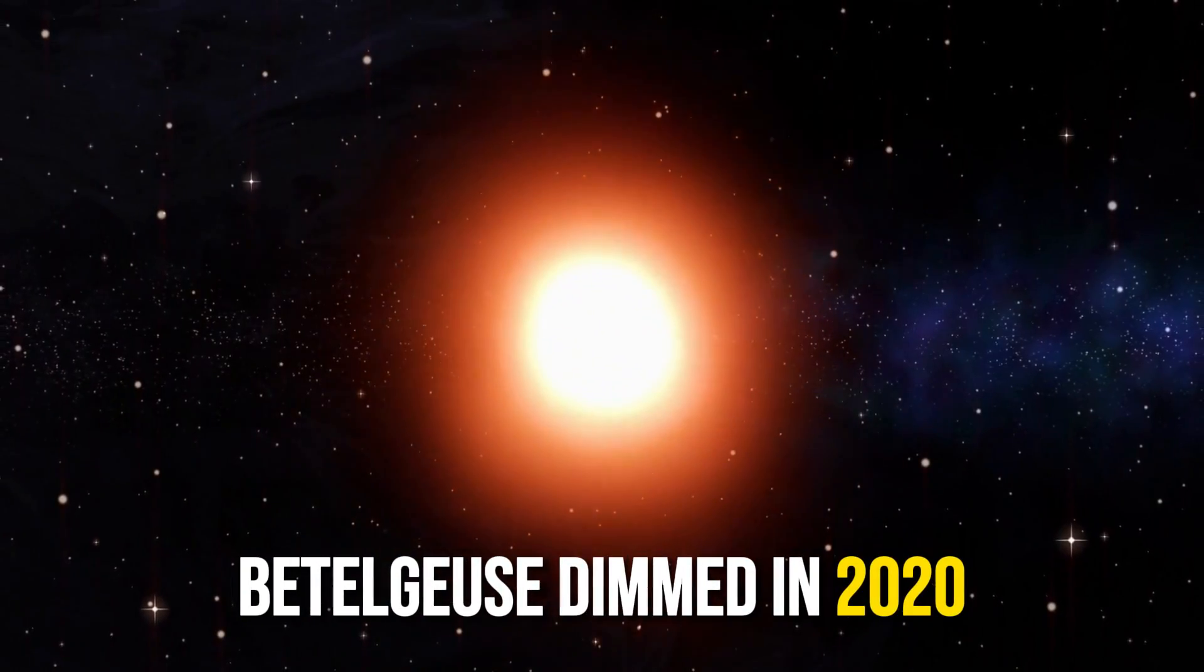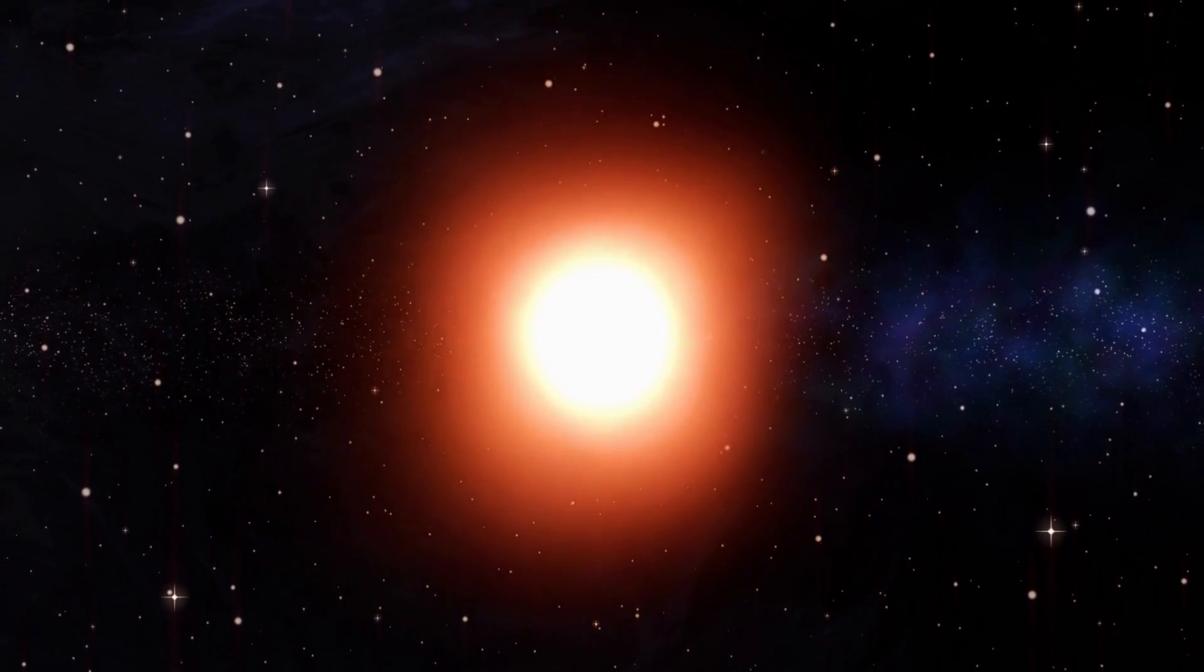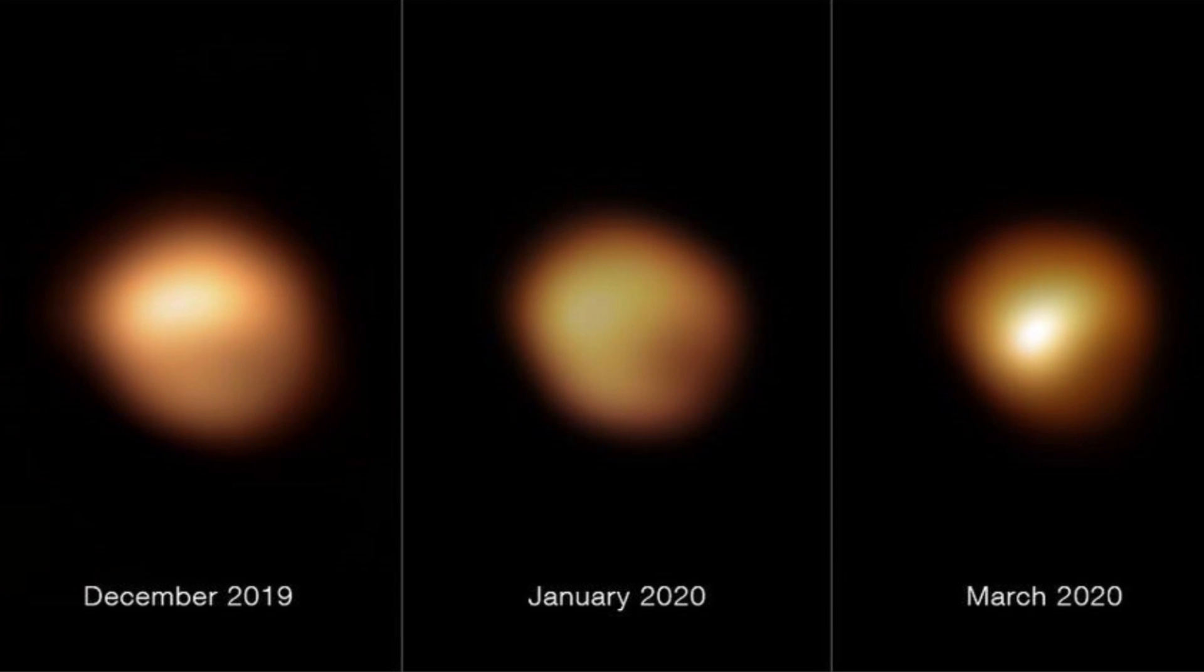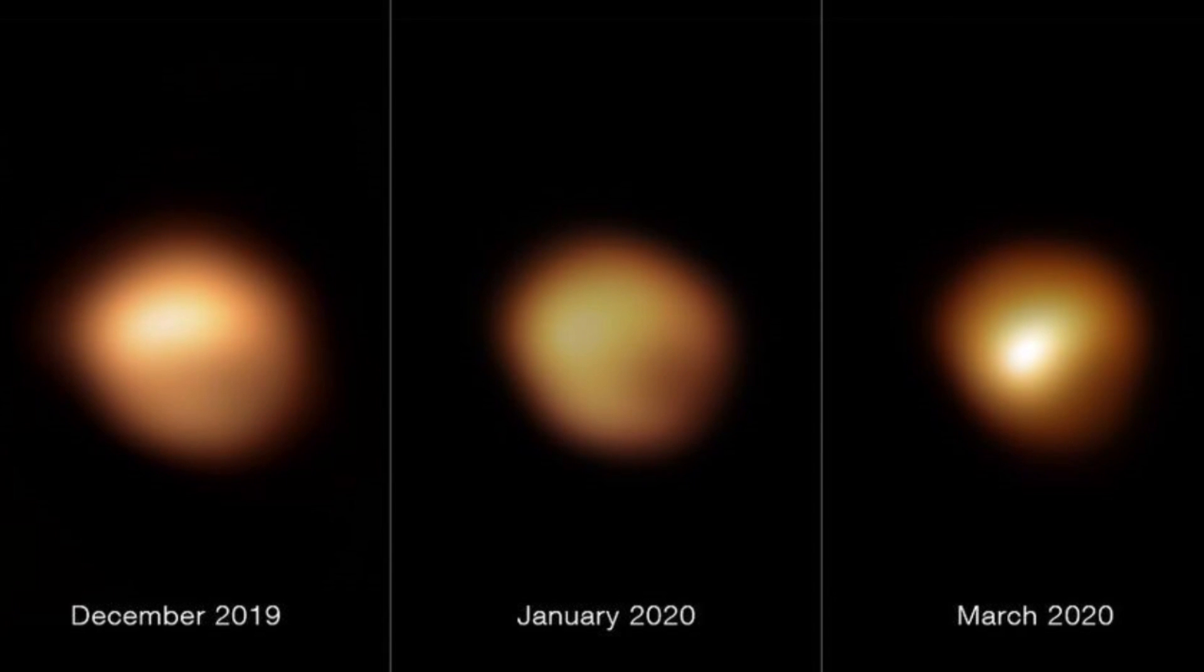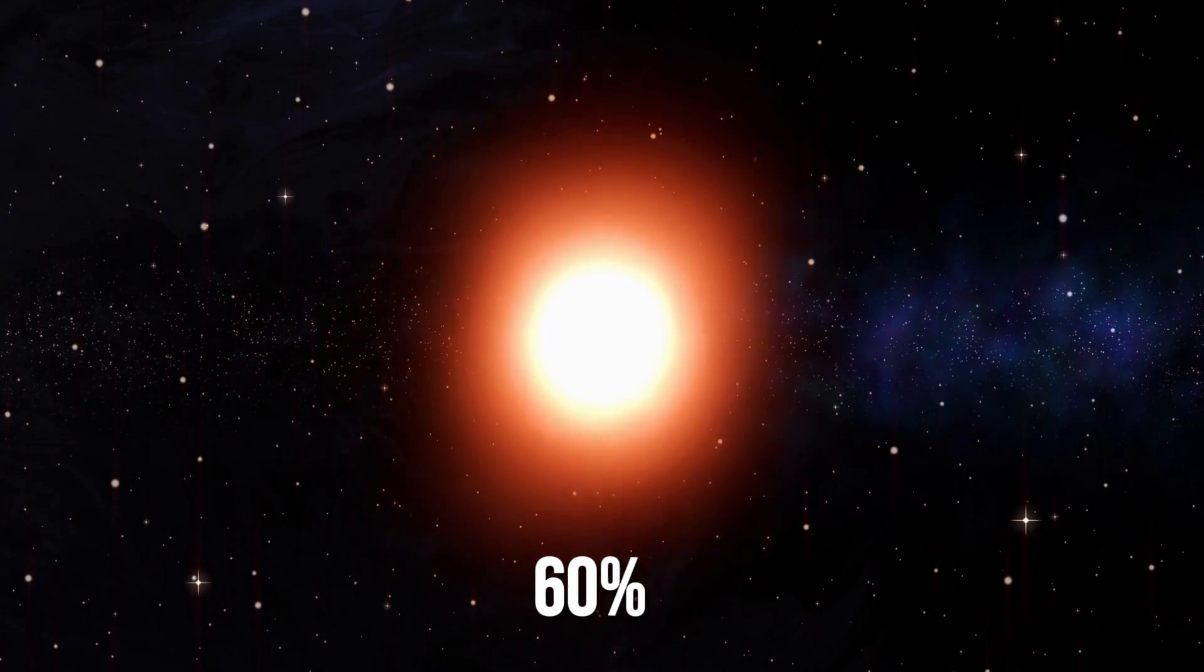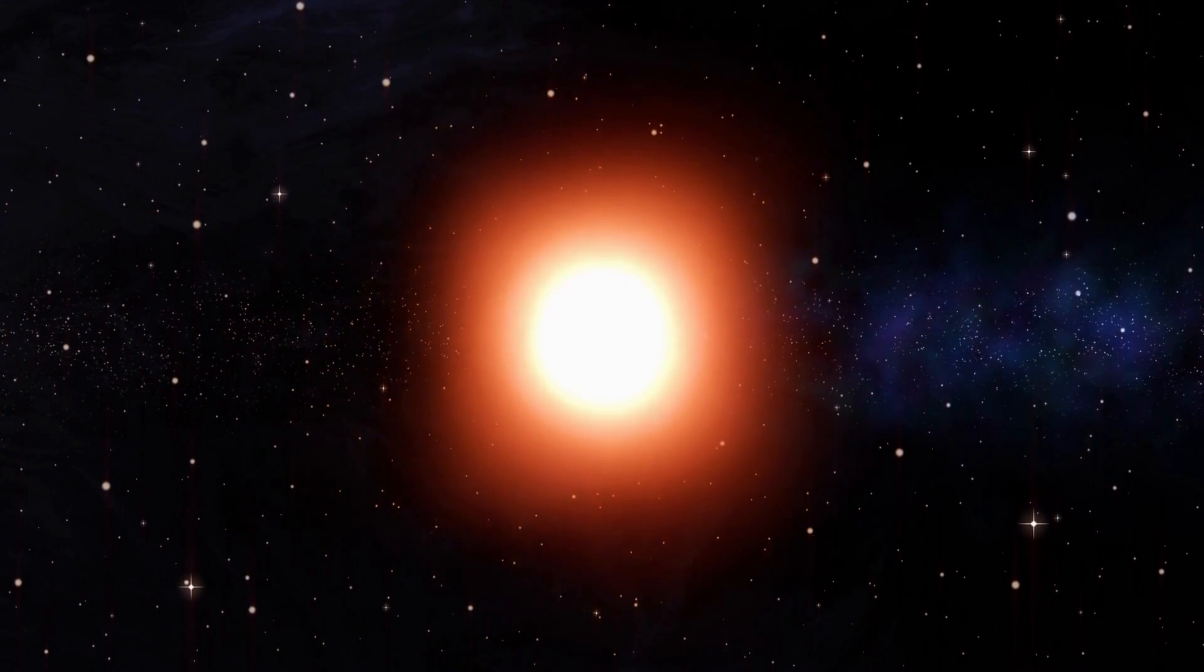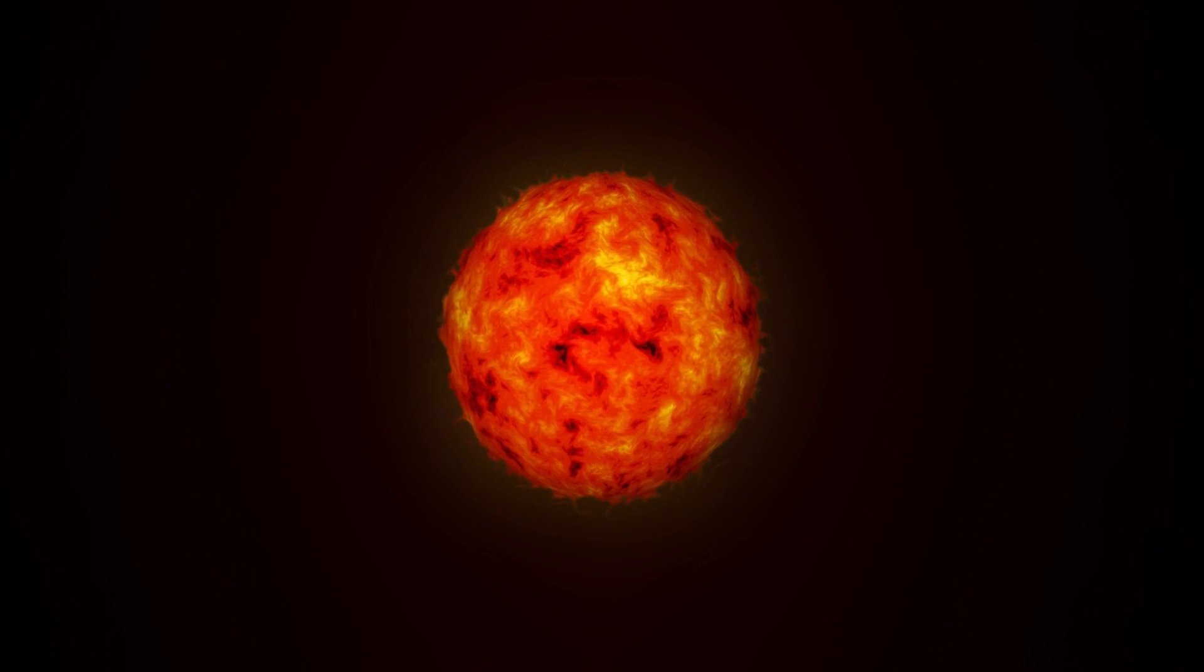Betelgeuse, having dimmed significantly in 2020, weaves a chapter that is both captivating and mysterious. The great dimming event of late 2019 and early 2020 defied the star's usual brightness patterns, setting the stage for a cosmic puzzle that would captivate astronomers worldwide. Dimming by an astonishing 60% within mere months, Betelgeuse's dramatic act unfolded swiftly, sparking a flurry of scientific inquiry.